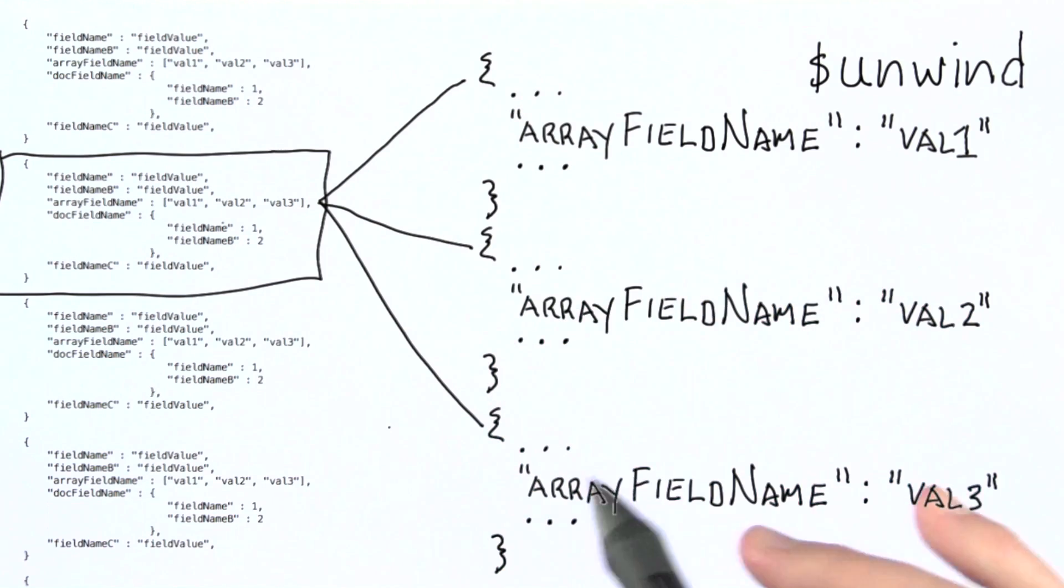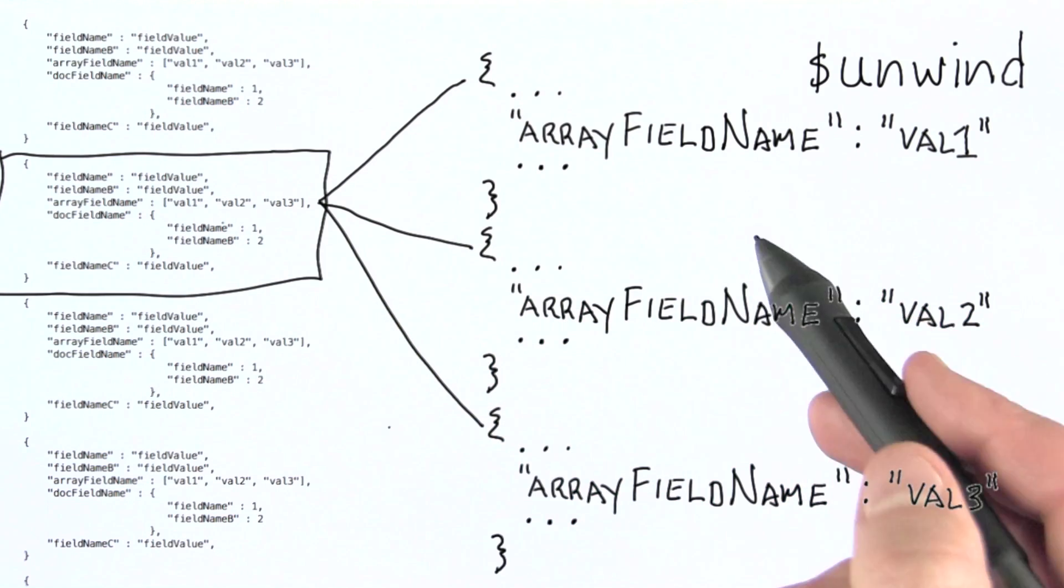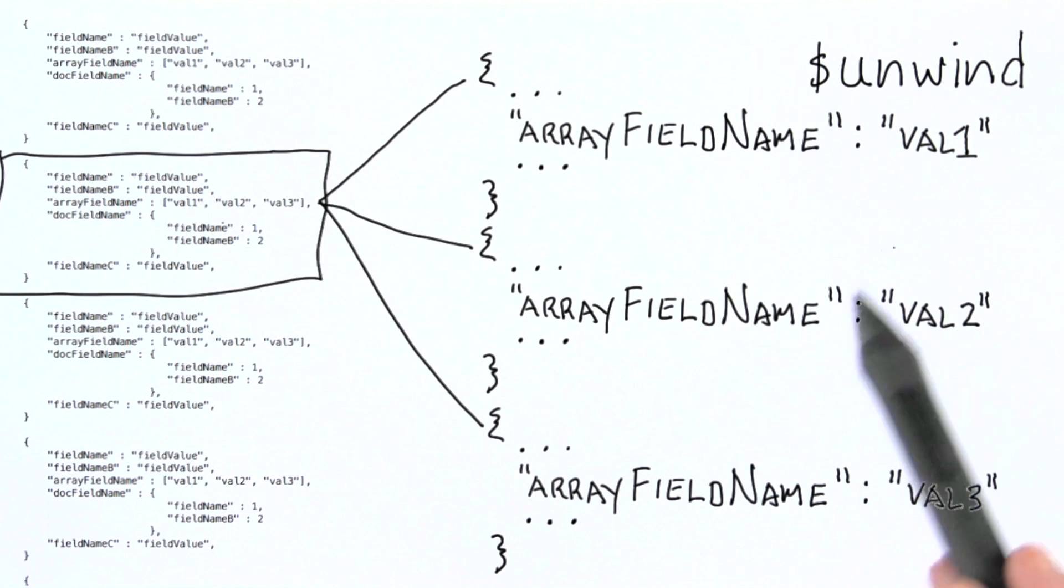Now the value of doing something like this is we could run a group by stage as the next stage of the pipeline, where we actually care about what the individual values are and want to group on those individual values.